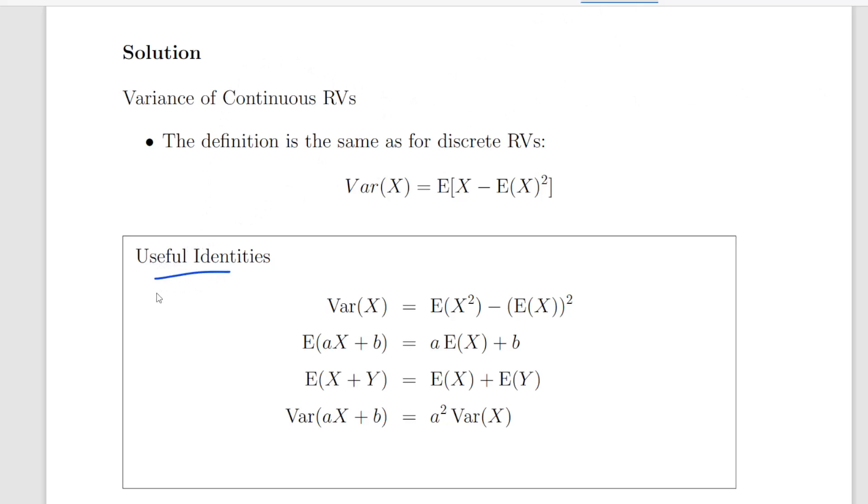The useful identities are: the variance of X is the expected value of X squared minus the expected value of X to be squared. Notice there's a big difference between the two.